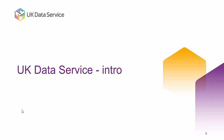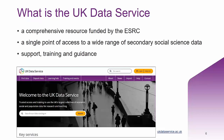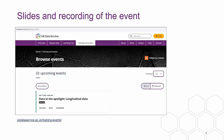So what is the UK Data Service? It is a comprehensive resource funded by the ESRC — a single point of access to a wide range of secondary social science data. We not only provide data but also support, training, and guidance. All slides and the recording of this event will be available afterwards on our webpage under Training and Events — previous events once uploaded. You don't need to scribble everything down; you can access it afterwards.